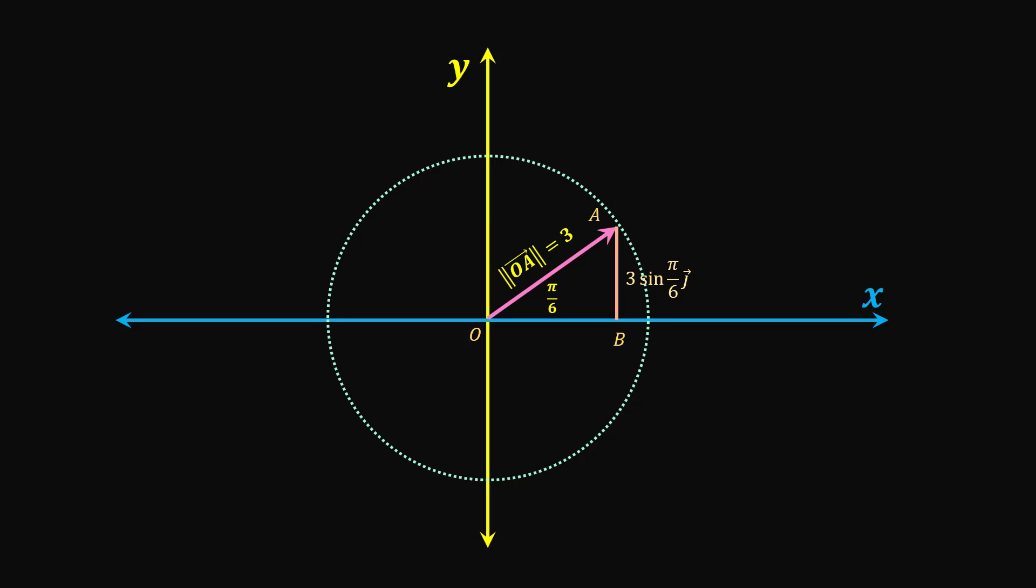Similarly, length of OB which gives us x component equals 3 times cosine of π/6 times I.